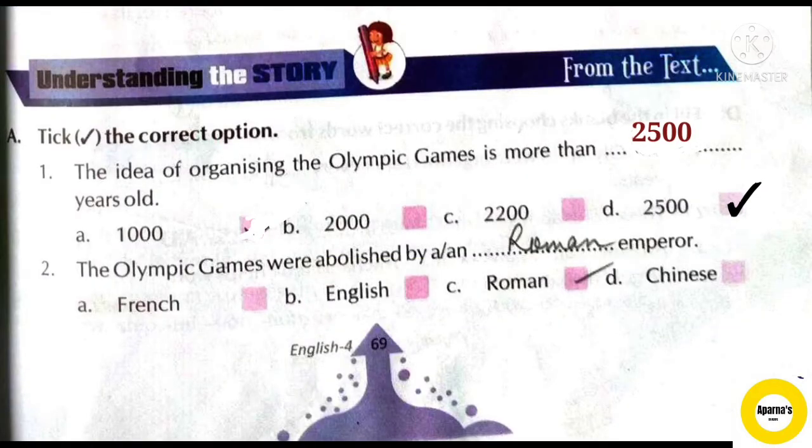Question number 1: The idea of organizing the Olympic Games is more than ___ years old. The answer is option D: 2500. The idea of organizing the Olympic Games is more than 2500 years old.